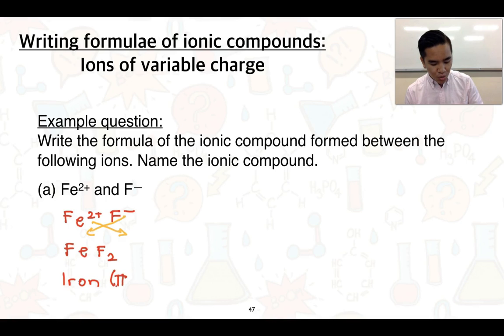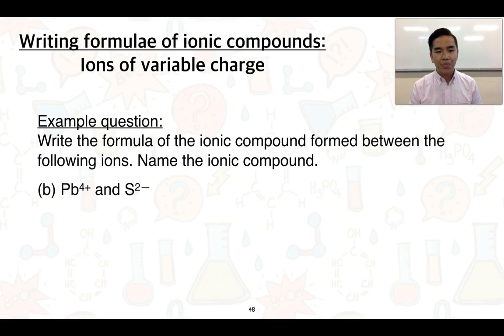Next example: we've got Pb4+ and S2-. So Pb is lead; this is going to be the lead(IV) ion. Let's go ahead and do this one. I'm going to crisscross them over, and what you might start to see is that if we look at counting the amount of charges, we could easily work out the simplest ratio would need to balance out those charges.